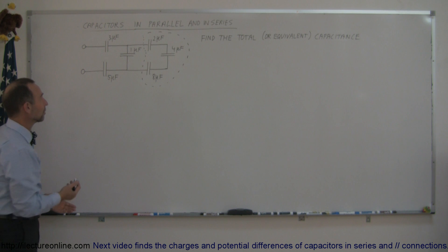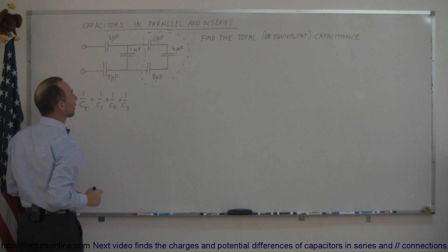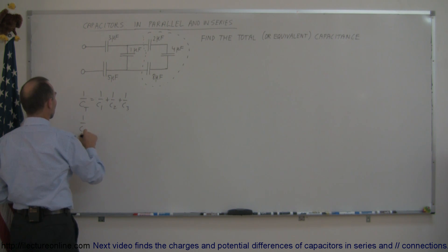Since there's three of them, for that back part of the circuit, one over C total equals one over C1 plus one over C2 plus one over C3. Since the capacitor sizes are two, four, and eight microfarads, one over C total equals one over two plus one over four plus one over eight.